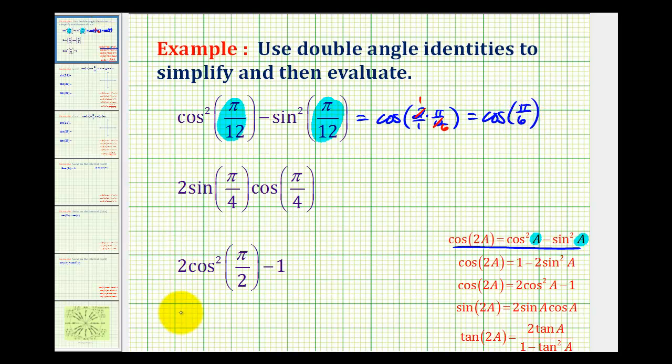Which is a 30 degree angle. Let's go ahead and sketch our reference triangle. And the cosine of 30 degrees is square root three divided by two.